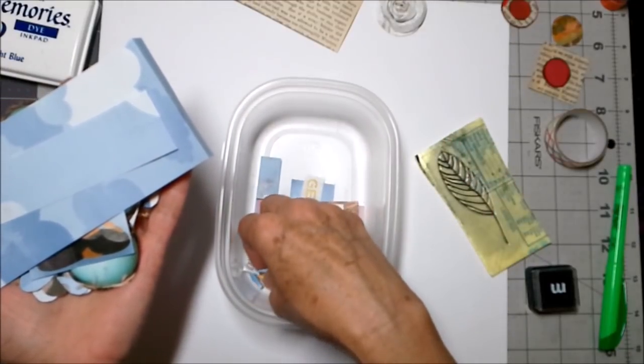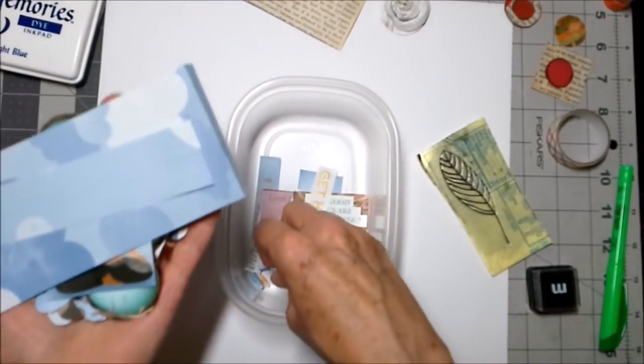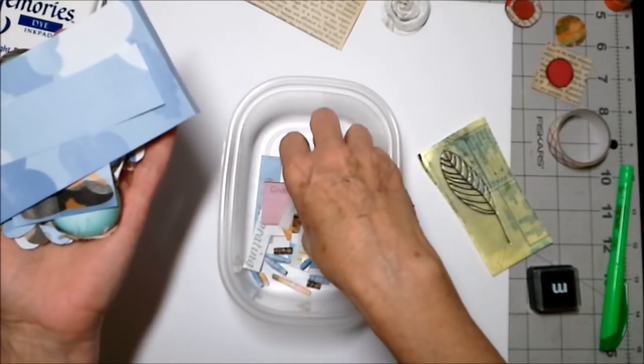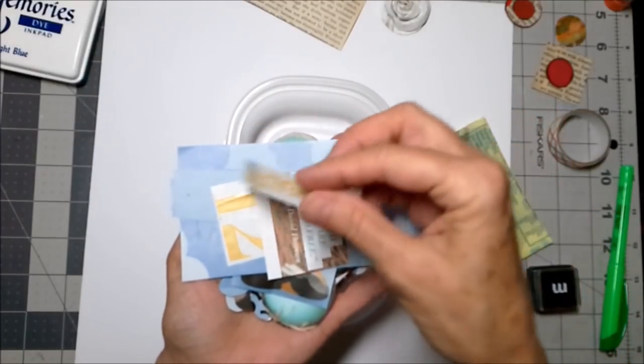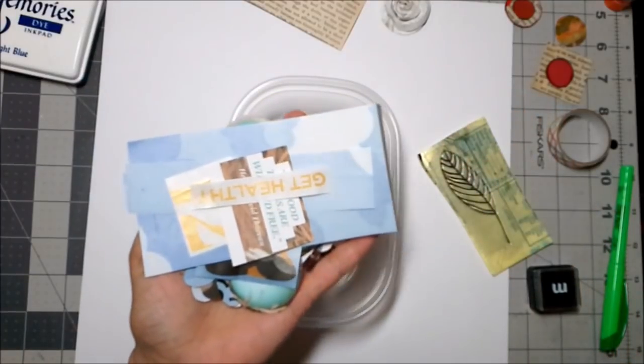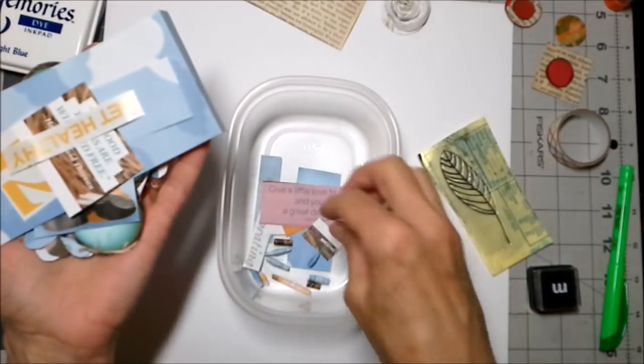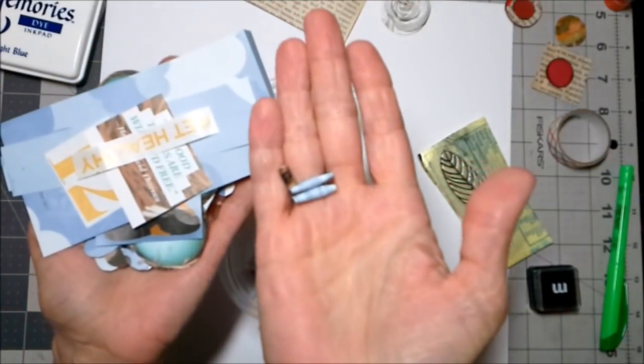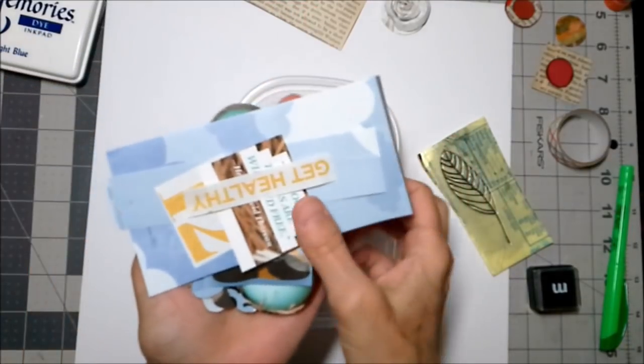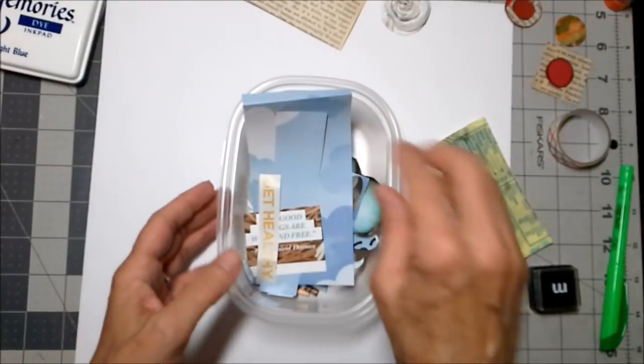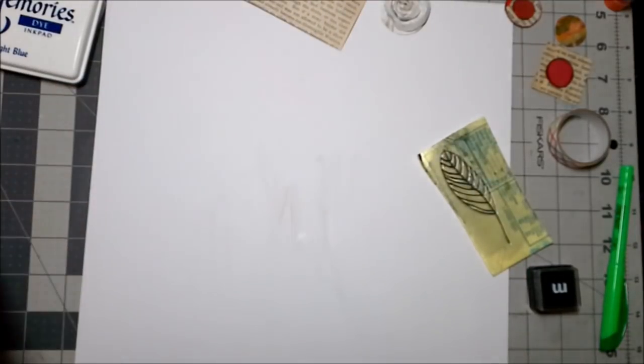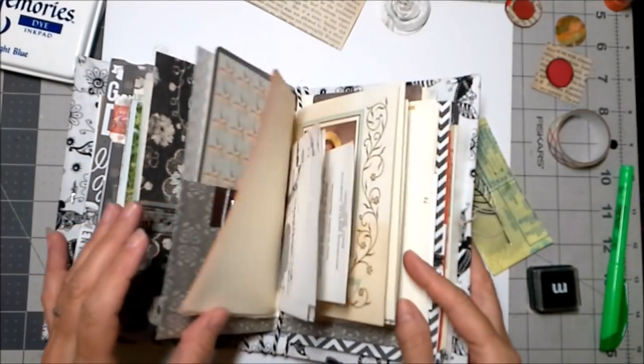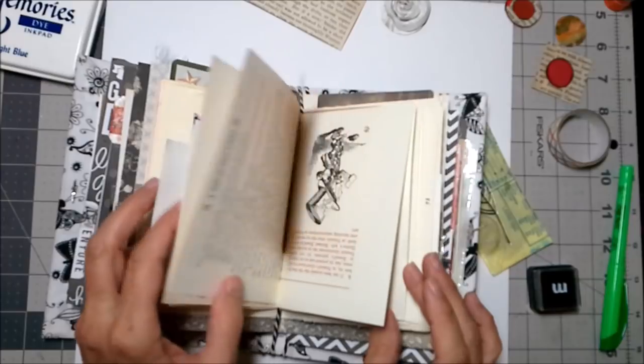We got some color blocks from the magazine pages. These always come in handy. In part four we're going to do a mini mixed media piece and that's where these color blocks come in really handy. We also harvested some words and numbers and made some little paper beads. Now we're going to work with the text page element that we have in our flow journal.